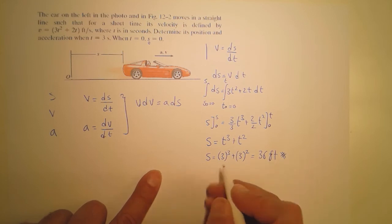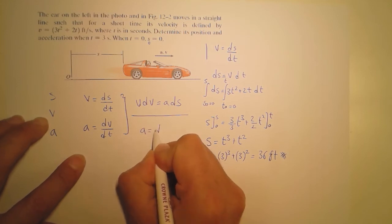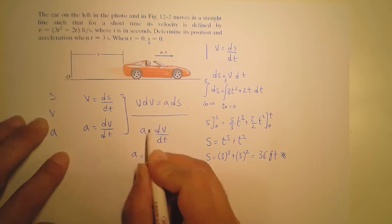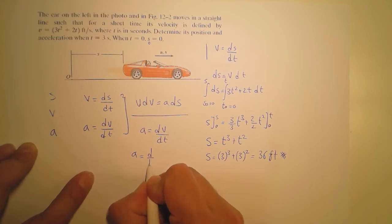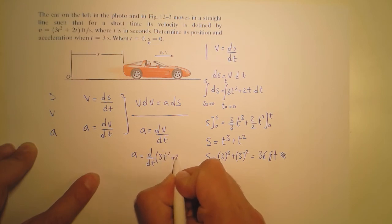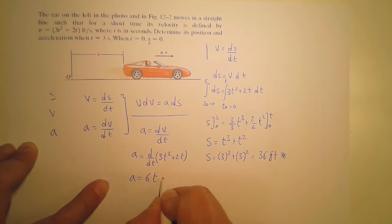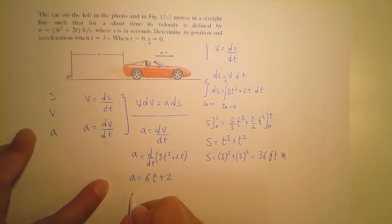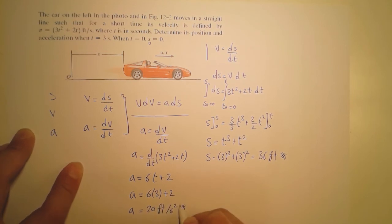For the acceleration, we use a equals dv over dt. Differentiating v equals 3t² plus 2t with respect to time gives a equals 6t plus 2. Substituting t equals three seconds: a equals 6 times 3 plus 2, so a equals 20 feet per second squared. Thank you for watching.